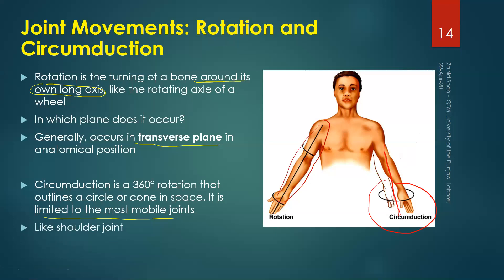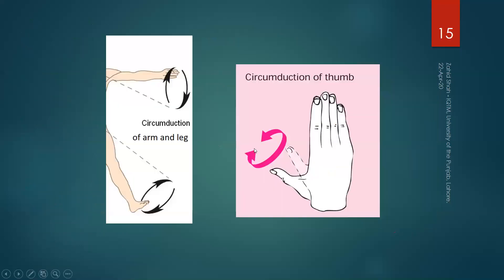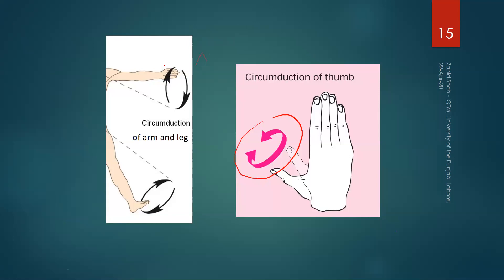A classical example of circumduction is the rotational movements possible at your shoulder joint. Another example is circumduction of your thumb. When you perform it, it is not exactly a circle that is formed — there may be some cone or ellipse due to resistance to exactly circular movements. Similarly, you can see circumduction of your arm and circumduction of your leg.